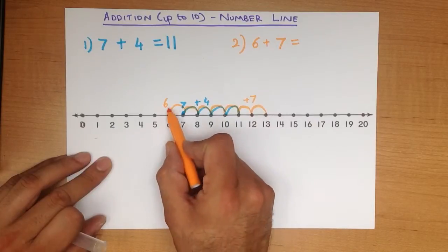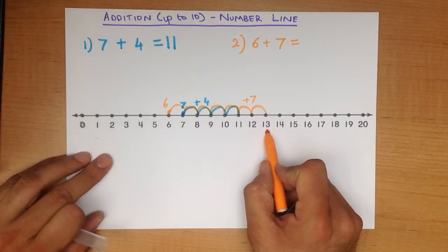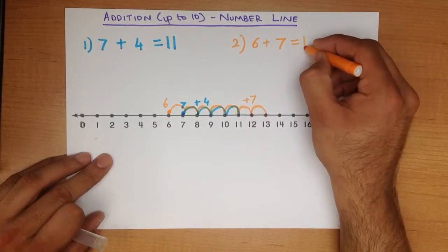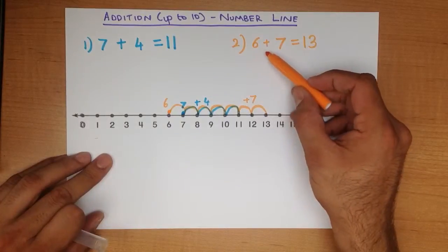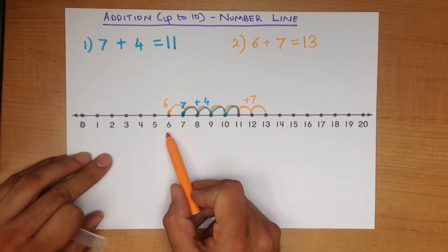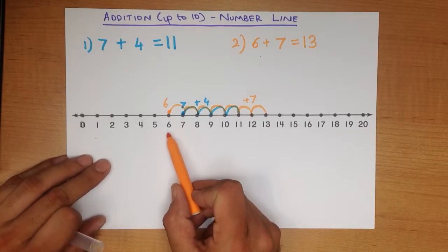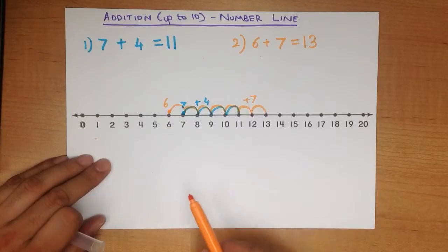So we got 6 plus 7 jumps. What number did we finish on? It's number 13. And that's our answer. 6 plus 7 equals 13 using the number line. Do you see how easy it is to use the number line to come out with the right answer?